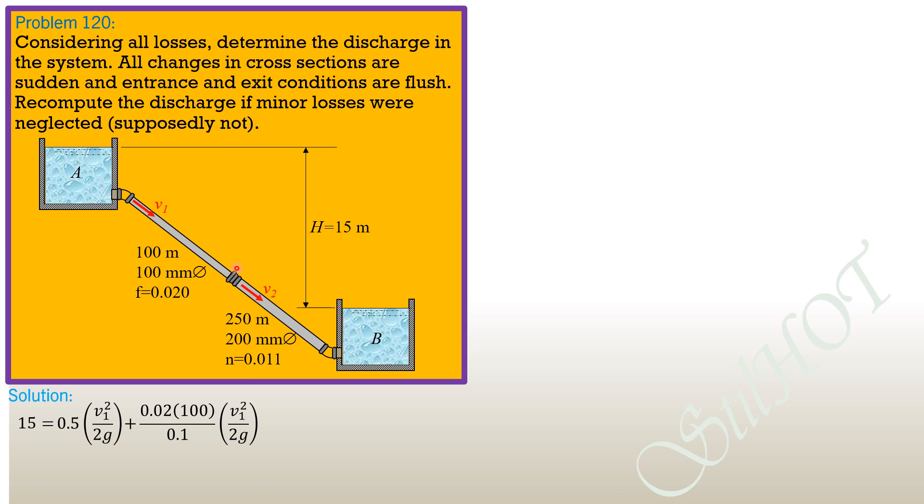Head loss due to sudden expansion, which is quantity V1 minus V2 square over 2G. So remember the formula for sudden expansion or enlargement.